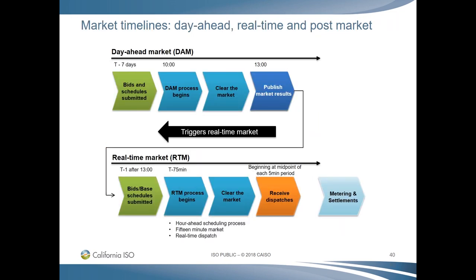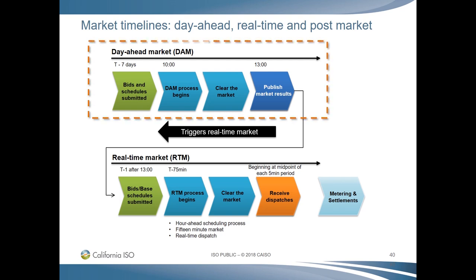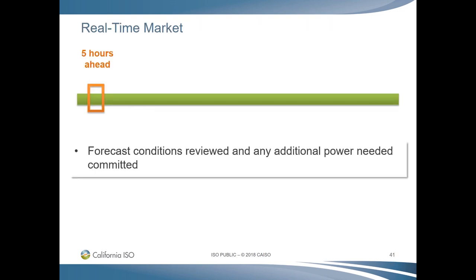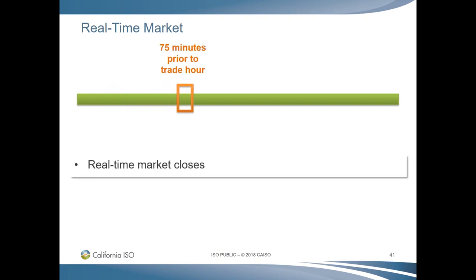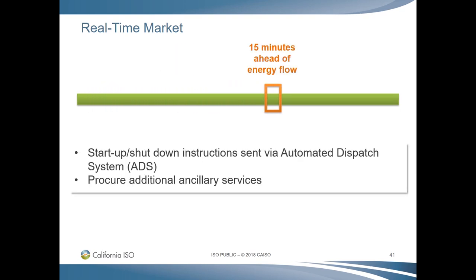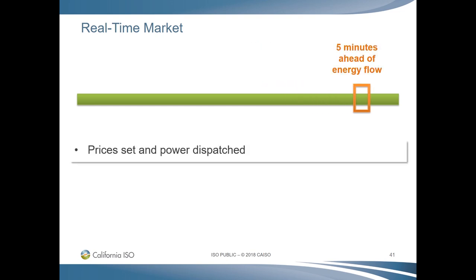Let's look at the market timelines. We've talked about both the day-ahead and real-time markets, and this diagram shows the relationship between the two. In the day-ahead market, bids are submitted, the market process is run, bids clear the market, and market results are published. When the day-ahead market is published, this triggers the opening of the real-time market. Bids are once again submitted along with base schedules from our Western Energy Imbalance, or EIM, participants. Market processes run, bids clear, and dispatch orders are sent to generators. The market is then settled in our post-market processes.